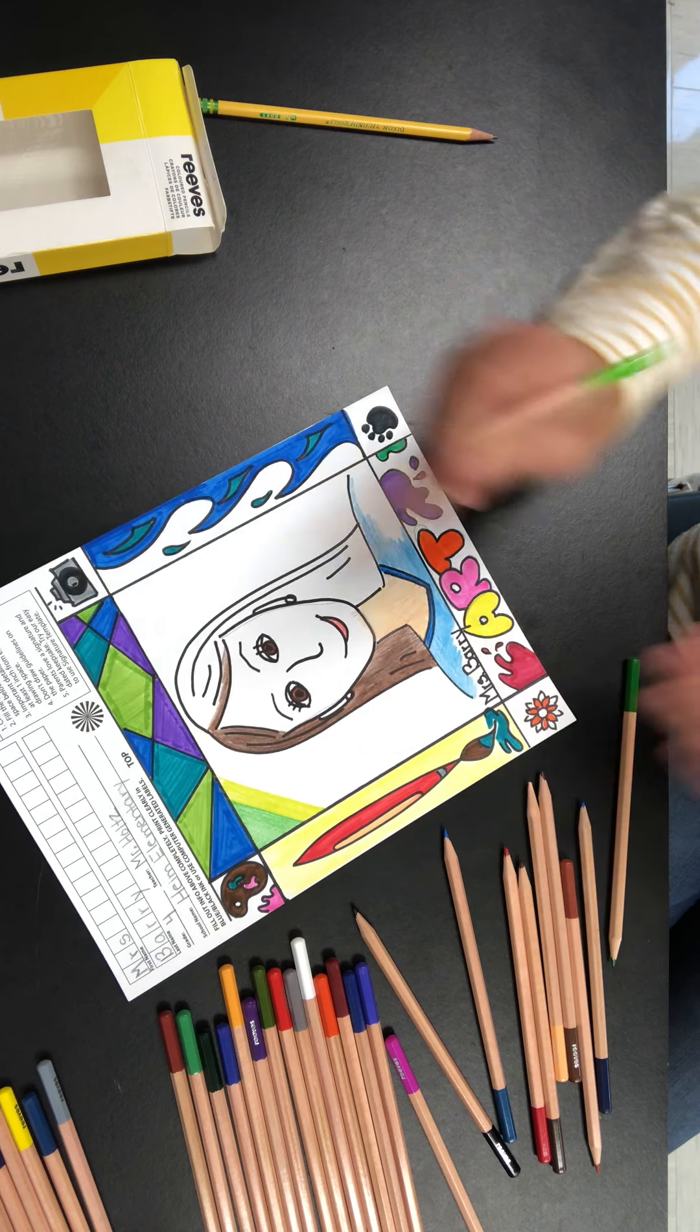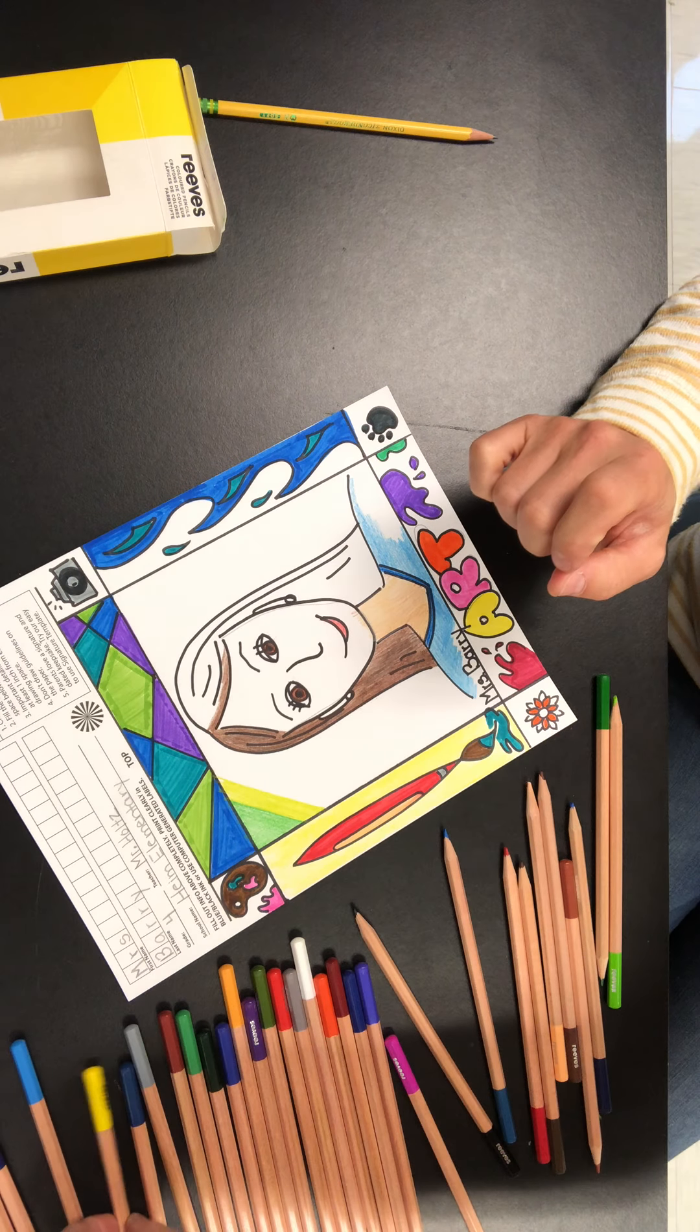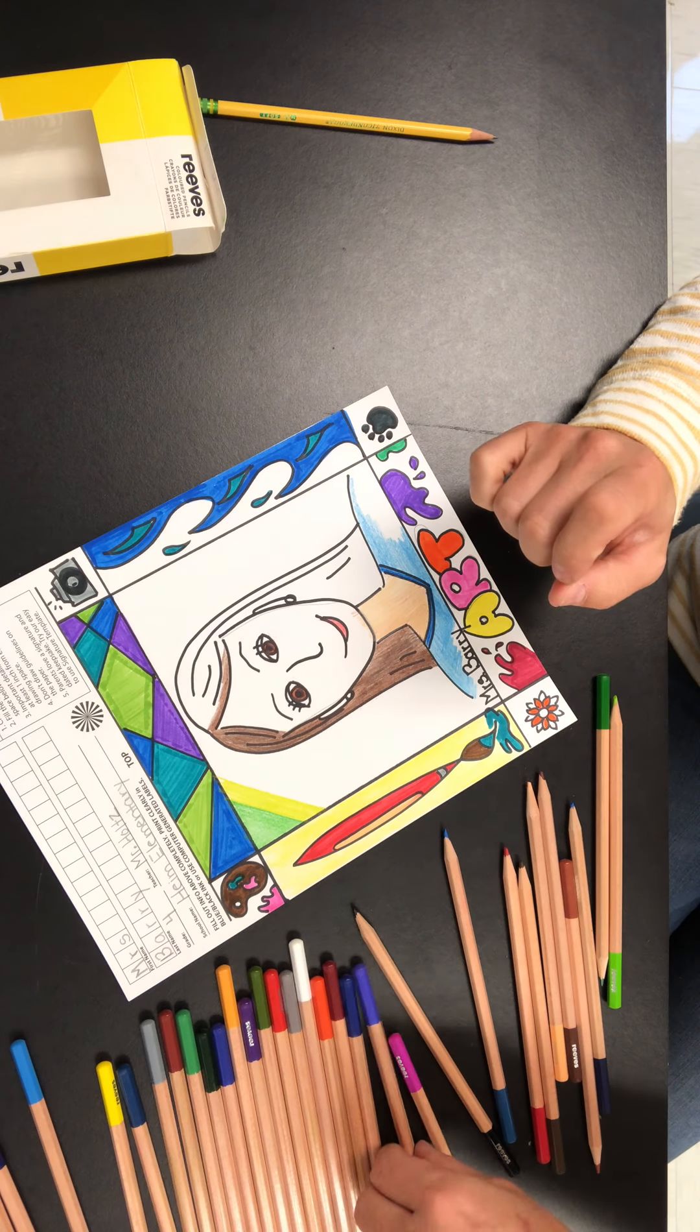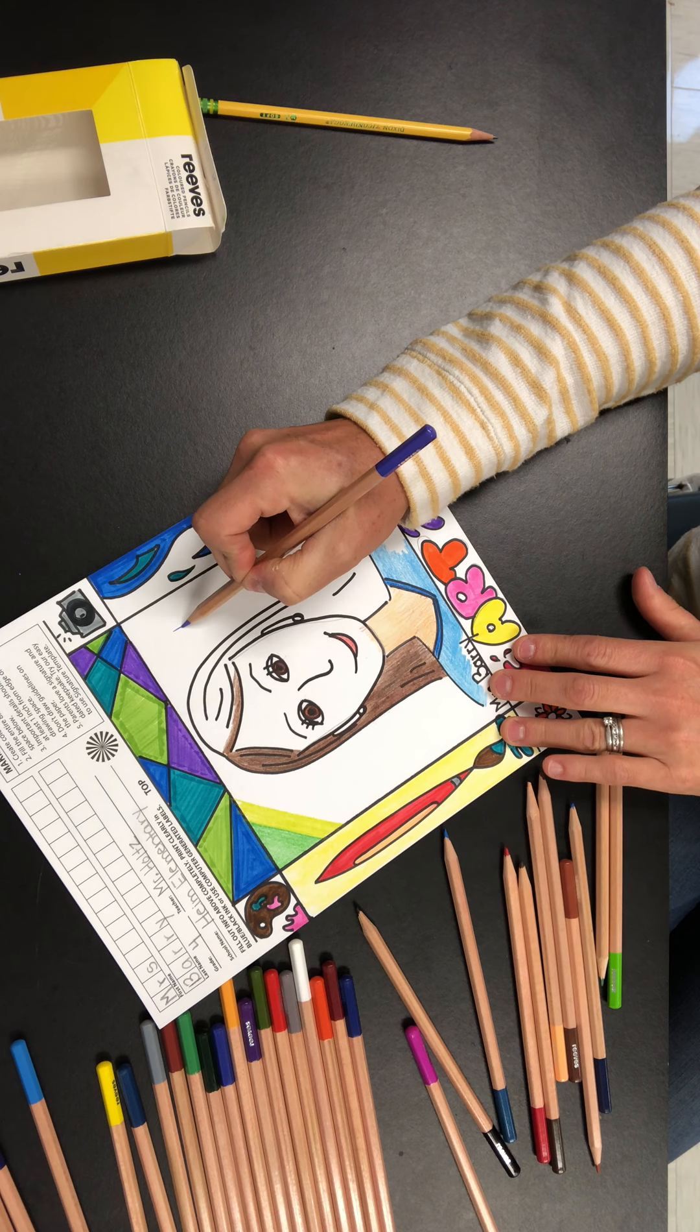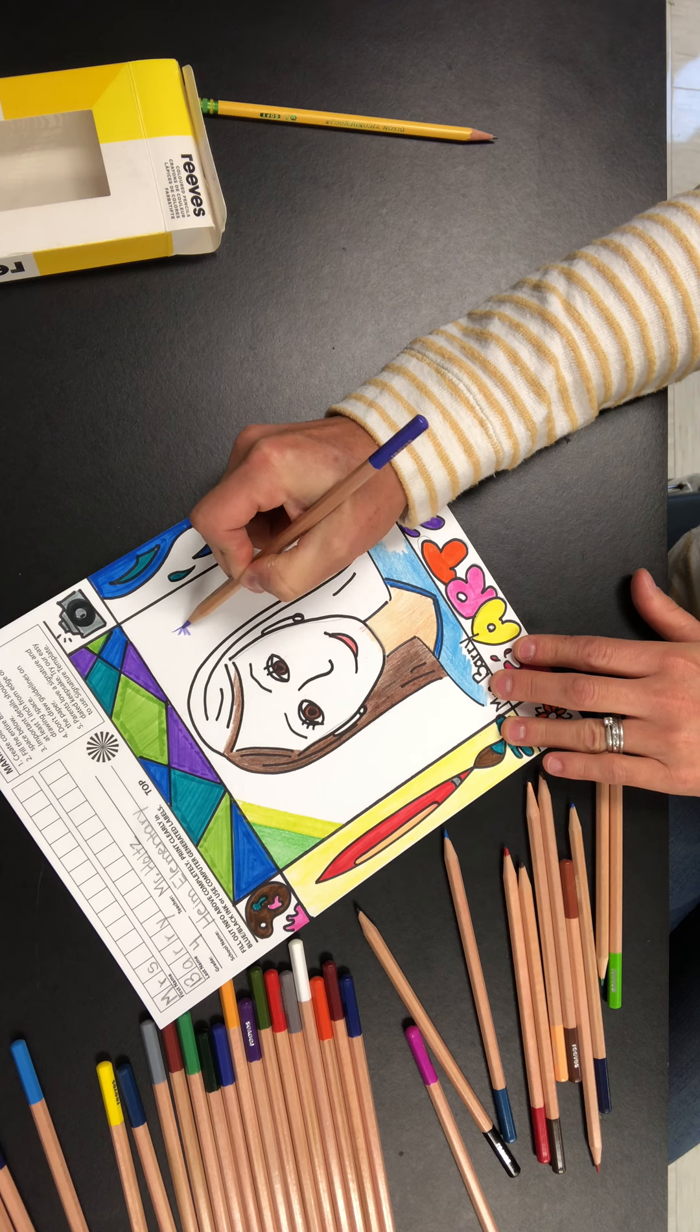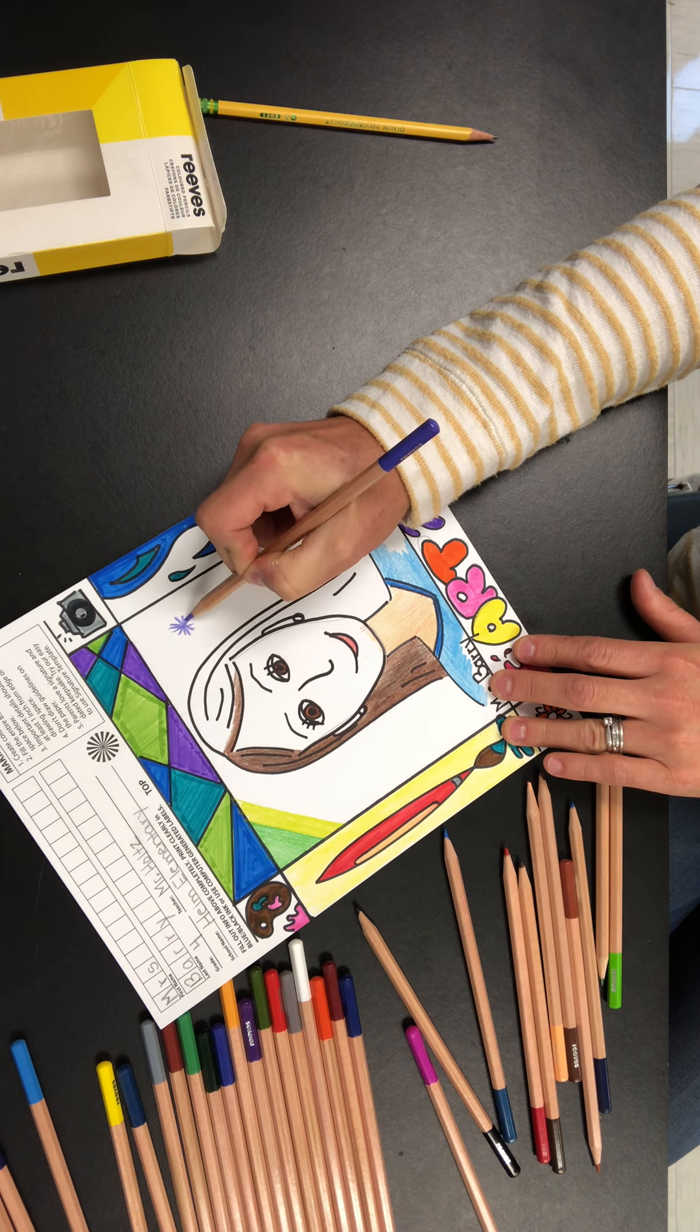All right, I wanted just to show you, if you wanted to do that burst that I showed you in our Zoom, what you do is you start with one color, all right, and you start from the inside, go out, inside out, and you just keep fanning around. It's kind of like a big sunburst.